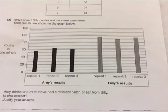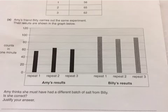This is the second part of the question, where they're actually asking you to do something. Amy's friend Billy carries out the same experiment, and their results are shown in the graph below. You can see Amy's three results plotted, and then Billy's results plotted. Amy thinks she must have had a different batch of salt from Billy — is she correct? Justify your answer. You need to look at this data and decide whether the two batches are different. This question is worth two marks.